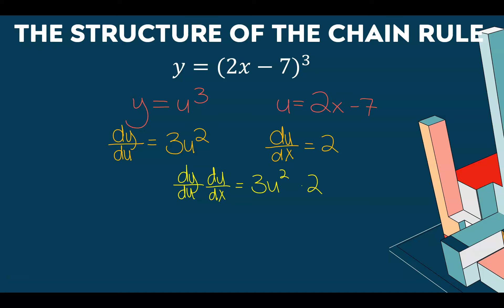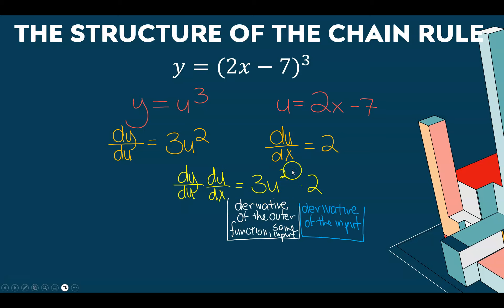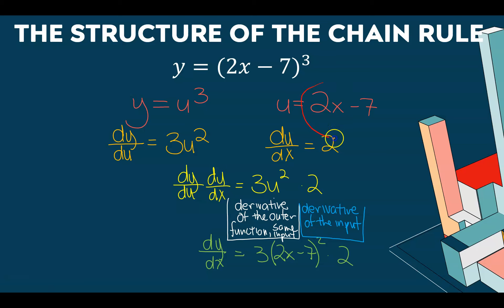For 2x minus 7 to the third power: this function is something cubed, and that something is 2x minus 7. The derivative of something cubed is 3 times the same something squared — if it's u here, it's u there. And the derivative of 2x minus 7 is 2. So we multiply everything back together, dy/du times du/dx. The 3u squared is the derivative of the outer function — 3 times the input squared, with 2x minus 7 put back in. And the 2 is the derivative of that input, 2x minus 7.